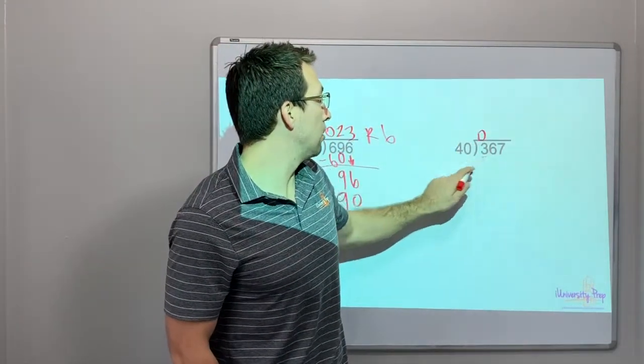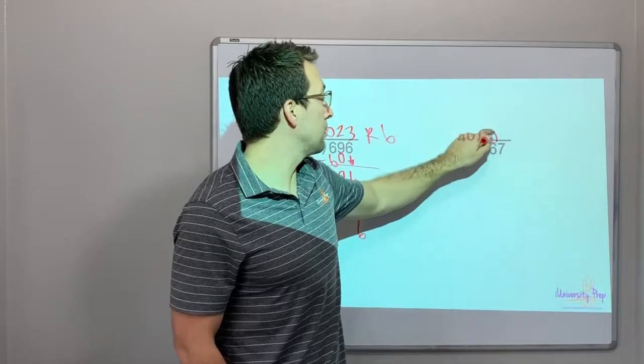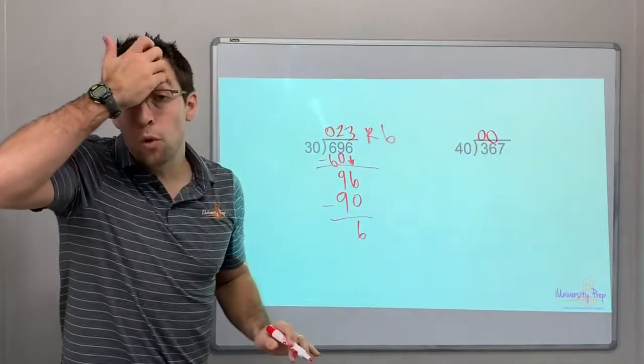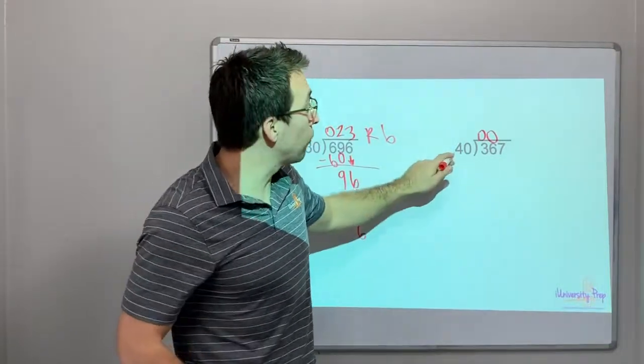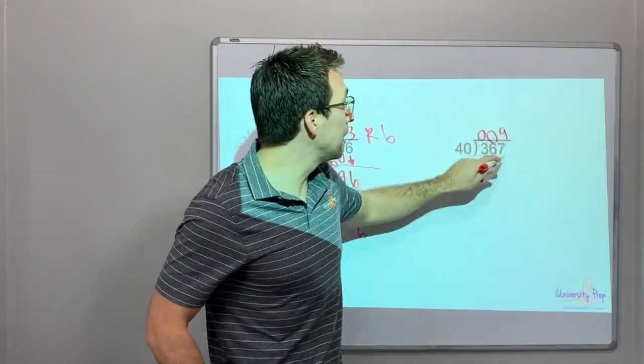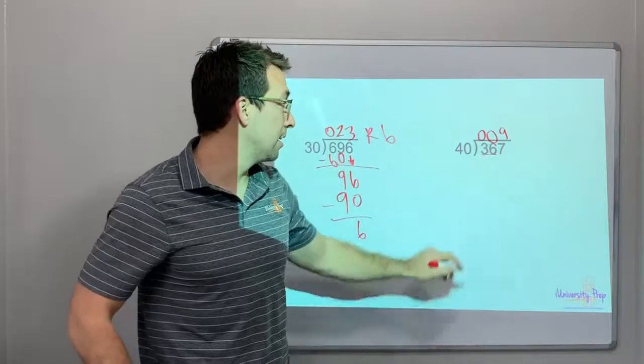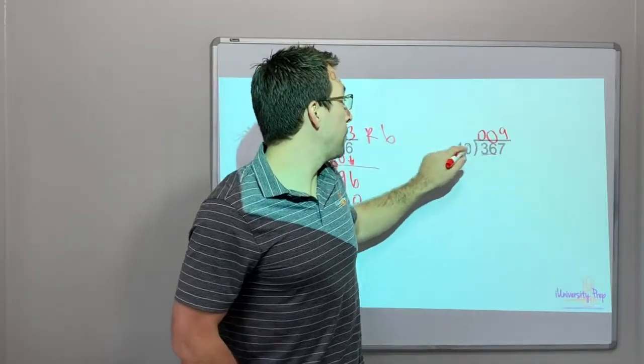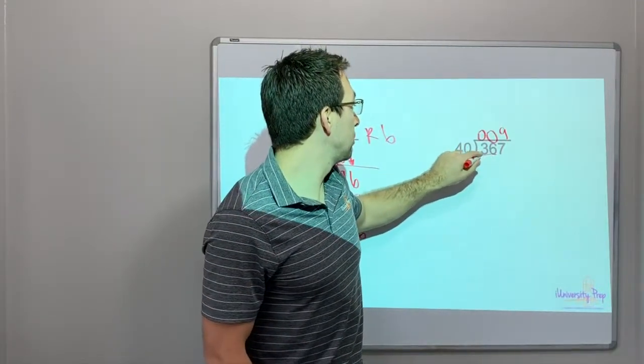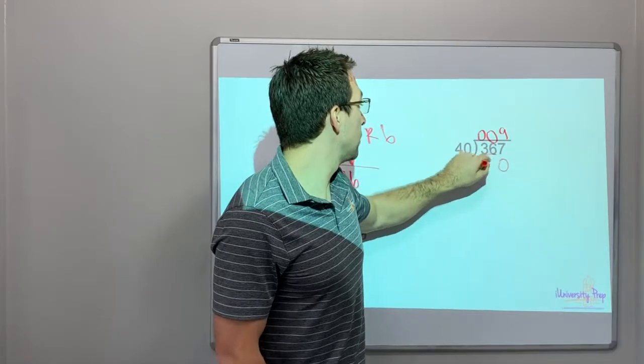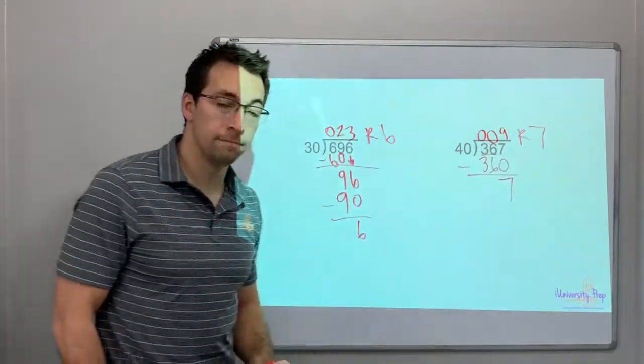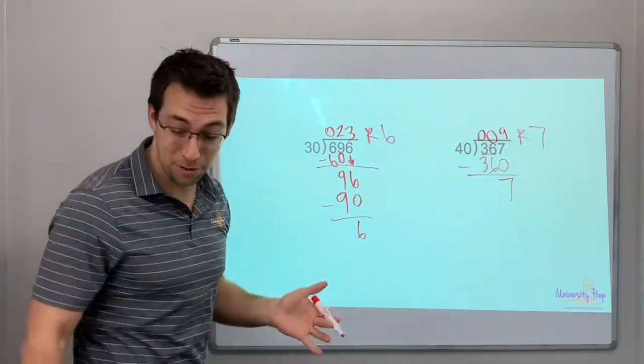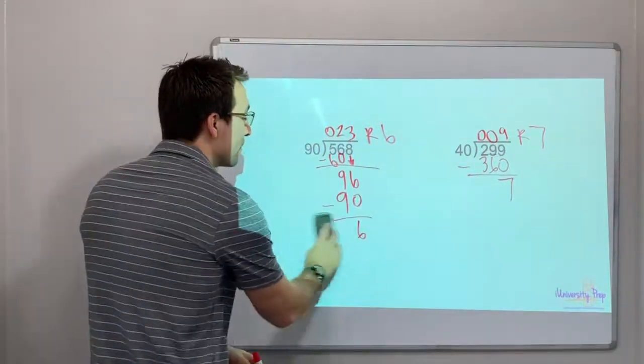40 goes into 36, 0 times. 4 and 36, compatible numbers. 4 times 9 is 36. Right? Alright, so 0, 367, 9 remainder of 7. Pretty cool, right? Compatible numbers.